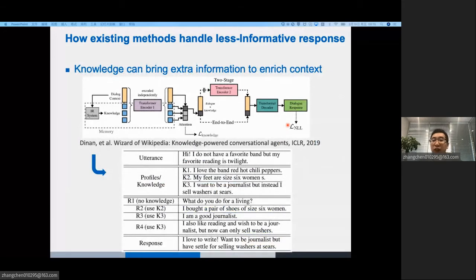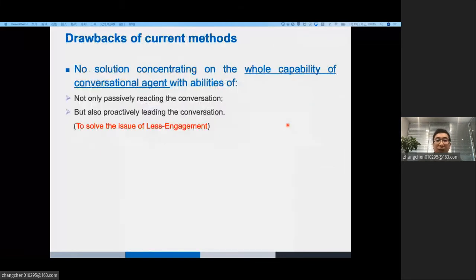Knowledge can bring extra information to ground the context. Yet, some knowledge-based models, such as the wiki wizard model, simplify the problem that a multi-turn context is concatenated as a single sequence. This information loss degrades the effect of knowledge selection. Let's talk about the drawbacks of current methods. There is no solution that concentrates on the whole capability of conversation, which is endowed with the skills of not only passively reacting to the conversation, but also proactively leading the conversation. In other words, they fail to solve the issue of less engagement.